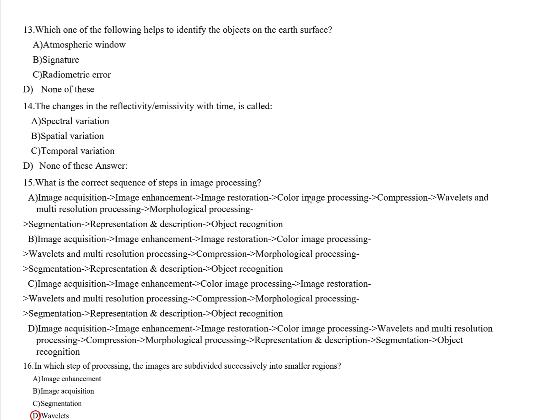Question thirteen: Which of the following helps to identify objects on the surface? Options include atmospheric window, signature, radiometric error, and nadir. The correct answer is signature. A signature is the reflectance of light from a surface, and using this signature we can identify whether an object is vegetation, a water body, or another surface type.